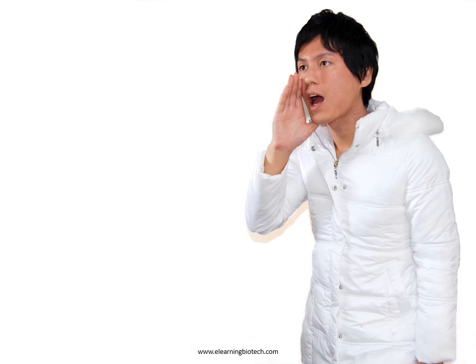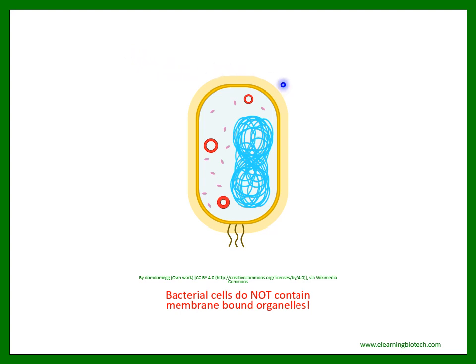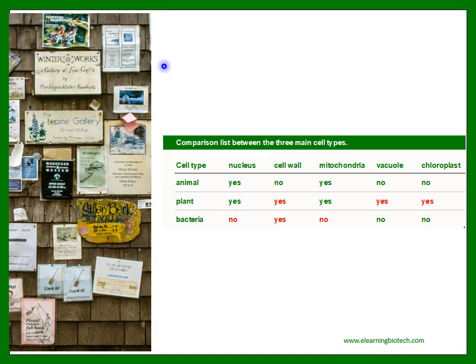Watch out — there is one key difference between eukaryotic cells and bacteria that you need to remember. As you can see on the sketch, bacterial cells do not contain membrane-bound organelles, which means no nucleus and no mitochondria. The blue structure is the bacterial chromosome. The violet structures are ribosomes, and the red circles are plasmids.